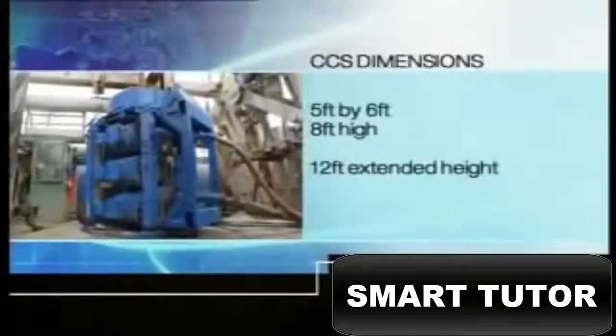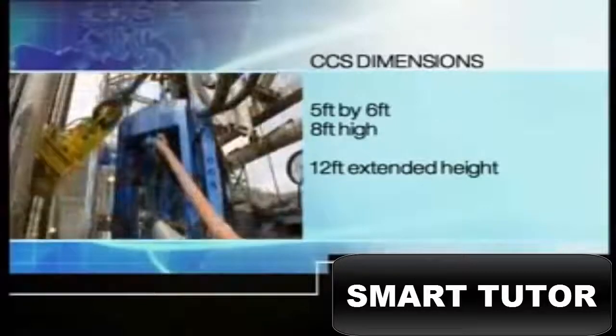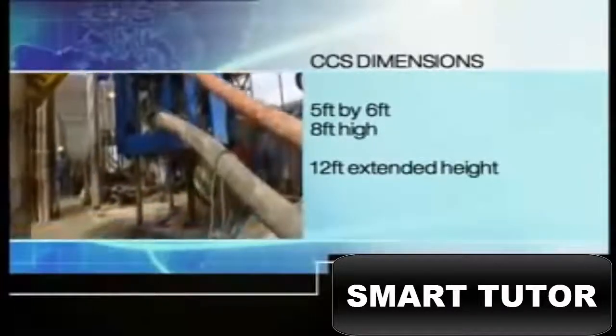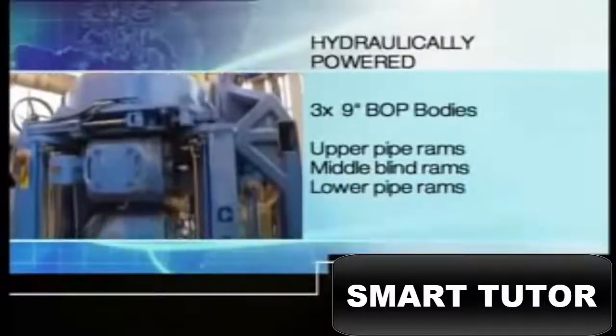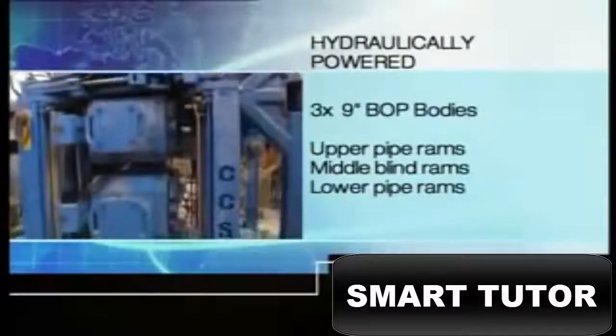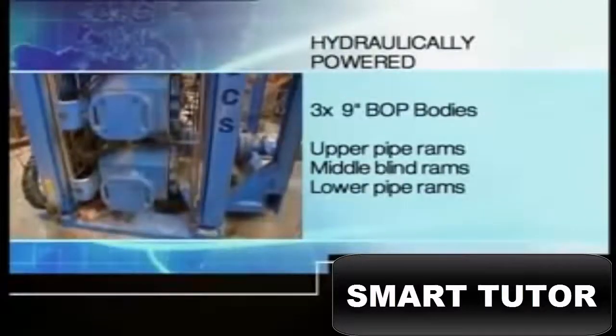The CCS rig floor package has a footprint of 5 feet by 6 feet and is 8 feet high, with an extended height of 12 feet. Hydraulically powered, it combines three 9-inch BOP bodies, with upper pipe rams, middle blind rams and lower pipe rams.